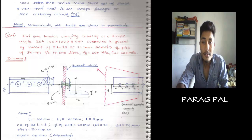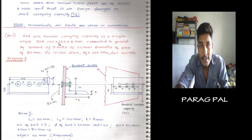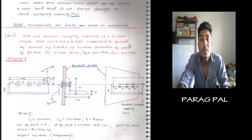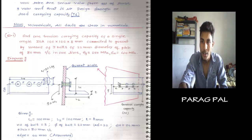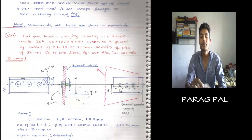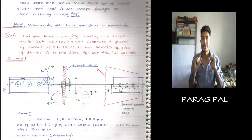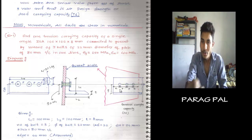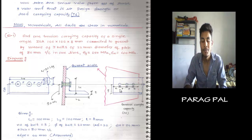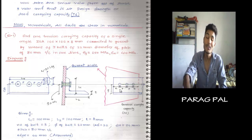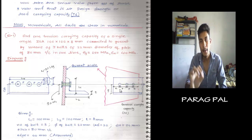L1 is 100, L2 is 100, and 8 is the thickness of the single angle. Connected to the gusset plate by means of 3 bolts of 22 mm diameter and pitch of 80 mm. Pitch means the center to center distance between two bolts, known as pitch. They are arranged in one line — not staggered. Staggered means the zigzag arrangement of bolts. Fy is 250 MPa and Fu means 410 MPa.